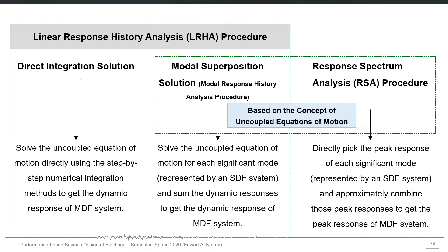In linear response history analysis, there are two solution methods: the direct integration solution method, and the modal superposition solution, also known as the modal response history analysis procedure. In this session, we will discuss the difference between the modal superposition solution and the direct integration solution. In the direct integration solution, we directly solve the uncoupled equation of motion using the step-by-step direct integration method to get the dynamic response of the multiple degree of freedom system.